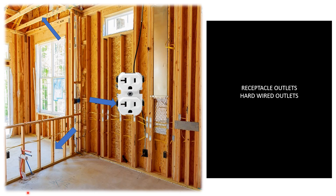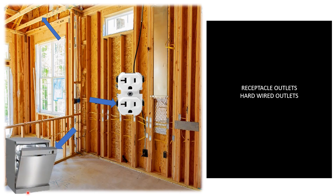The second type of outlets are hardwired outlets. A good example here is the dishwasher — they've stubbed out this wire right here. Hopefully the drywall crew remembers to poke it through the back, and the cabinet guys remember to poke it through the back, so it doesn't get lost in the wall. They're going to hardwire the dishwasher, so this is a hardwired outlet.